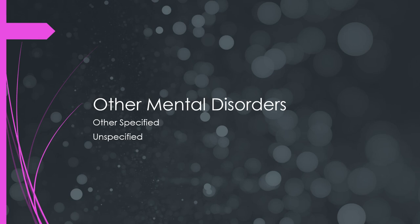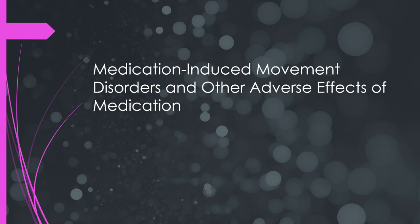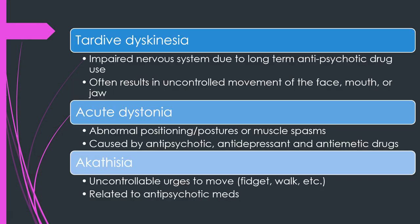Nearing the end, the DSM-5 also includes 'other mental disorders' — either other specified or unspecified mental disorders. There are also medication-induced movement disorders, including tardive dyskinesia (associated with long-term use of typical antipsychotic medications, seen with lip smacking or distinctive jaw movements), acute dystonia (abnormal positioning of muscles, caused by antipsychotic, antidepressant, or antiemetic drugs), and akathisia (uncontrollable urges to fidget or walk, also related to antipsychotic medications).